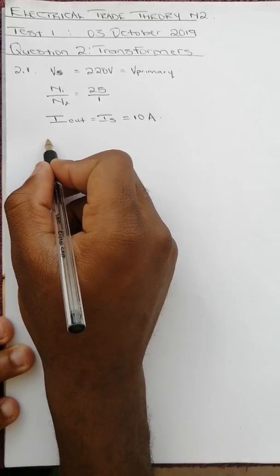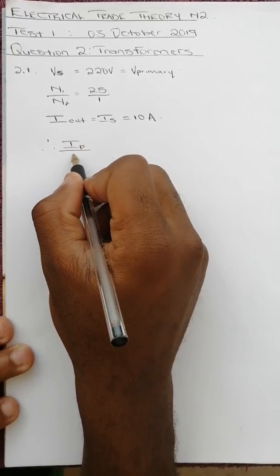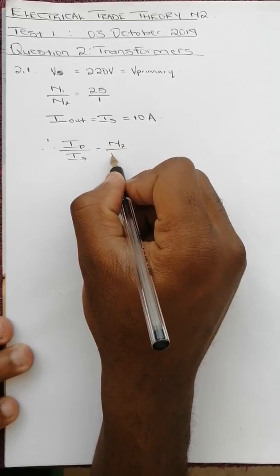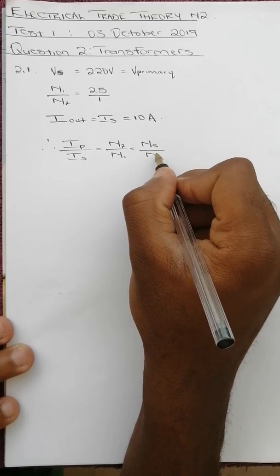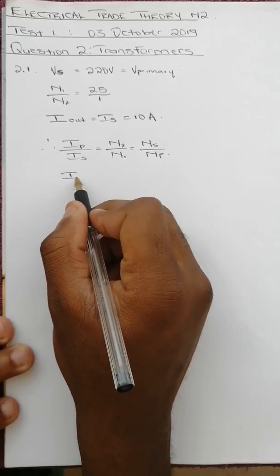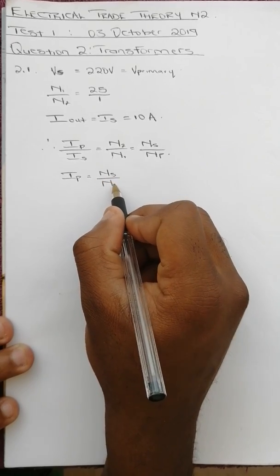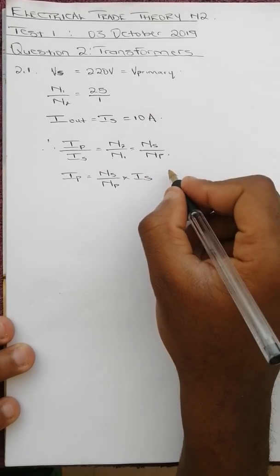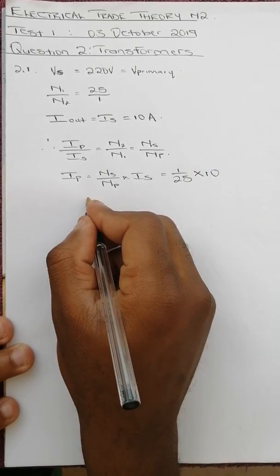We know from the ratios that I primary over I secondary equals N2 over N1, which is N secondary over N primary. When we make I primary the subject of the formula, we get I primary equals N secondary over N primary times I secondary. Substituting what we have: 1 over 25 times 10.